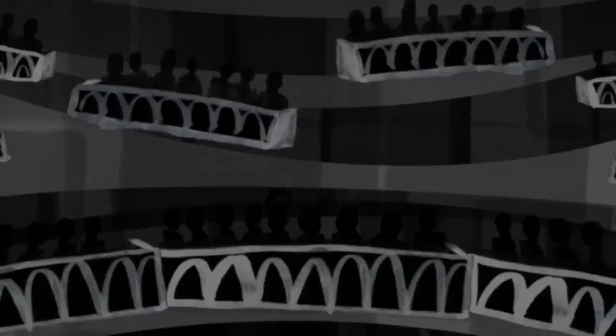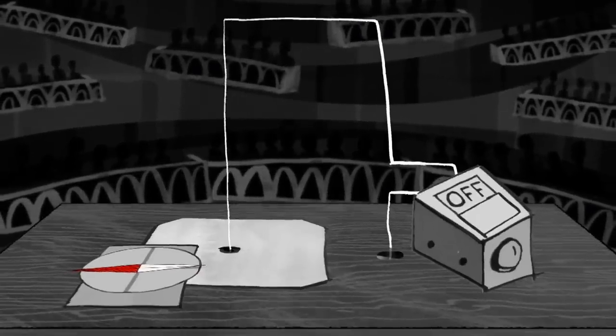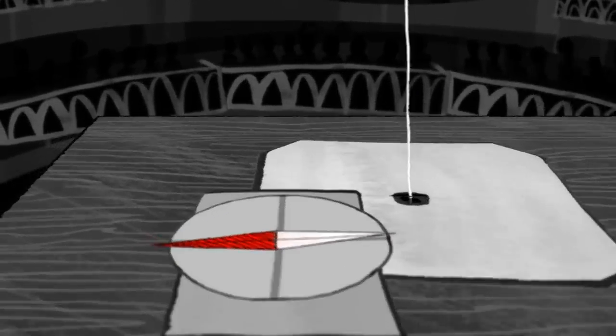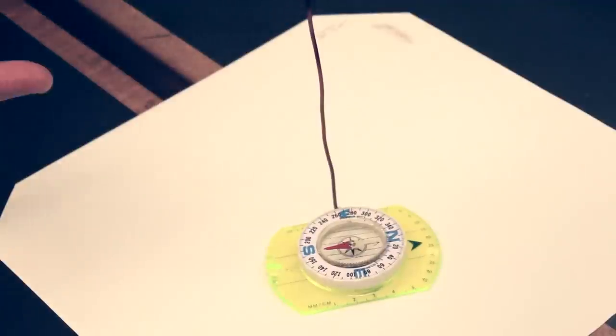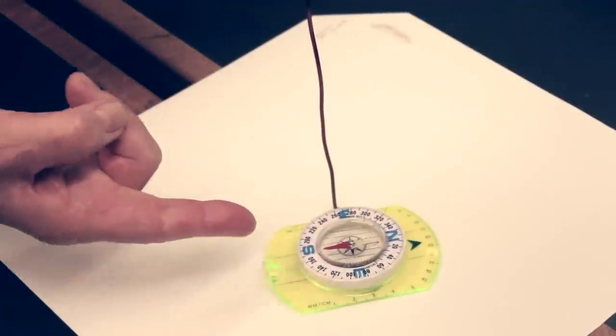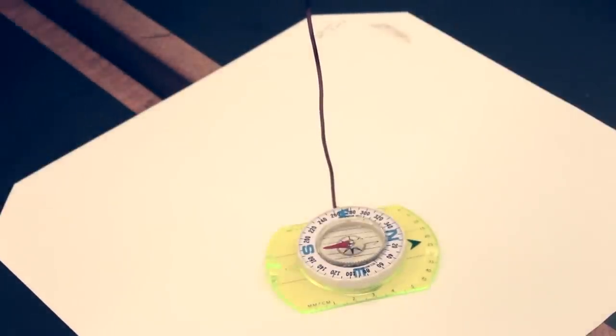Ørsted discovered in a public experiment that he did in front of a big audience that you could deflect the direction of the compass needle. I've got my compass needle, the red points towards the south, the silver side goes towards the north.